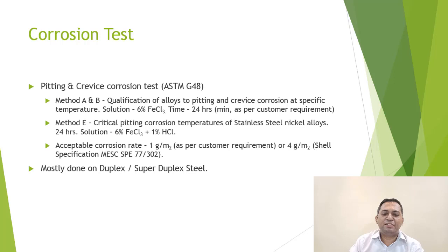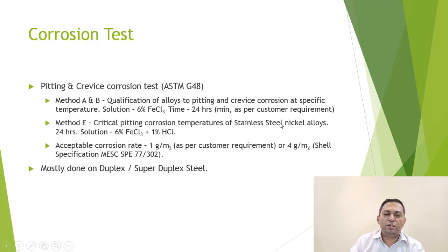Second is pitting and crevice corrosion test as per ASTM G48. Method A and B qualify alloys to pitting and crevice corrosion at specific temperatures — solution is 6% FeCl₃, time is 24 hours minimum. Method E tests critical pitting corrosion temperature of stainless steel and nickel alloys — 24 hours in 6% FeCl₃ plus 1% HCl; acceptable corrosion is 1 g/m² per customer requirement or 4 g/m² per Shell specification. Mostly done on duplex and super duplex steel.